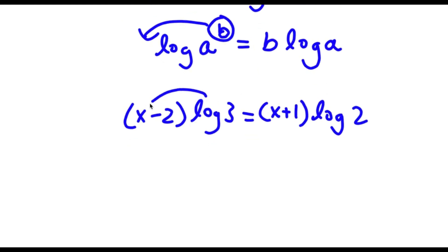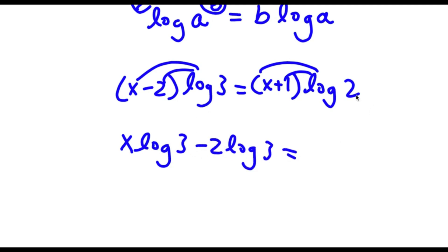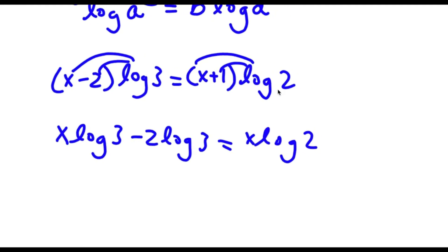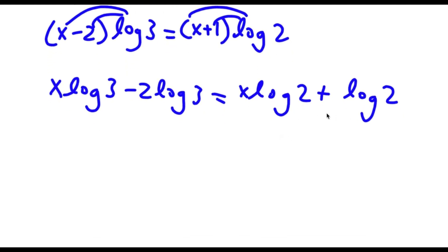Now for both of these, if I distribute log 3 and log 2: x minus 2 times log 3 gives x log 3 minus 2 log 3. And x plus 1 times log 2 gives x log 2 plus log 2. So now I have x log 3 minus 2 log 3 is equal to x log 2 plus log 2.